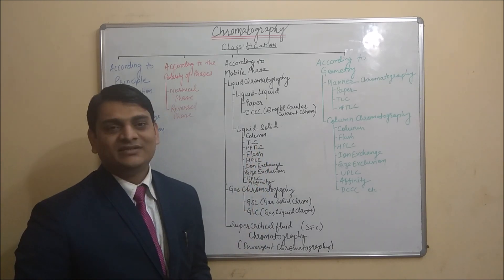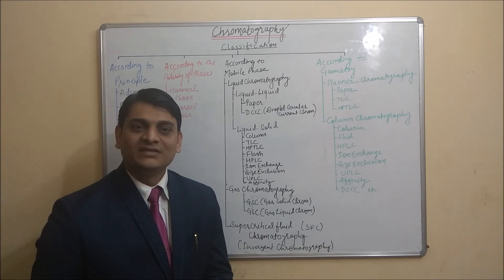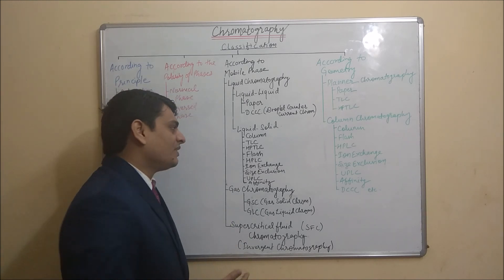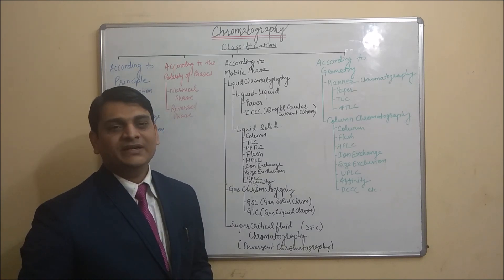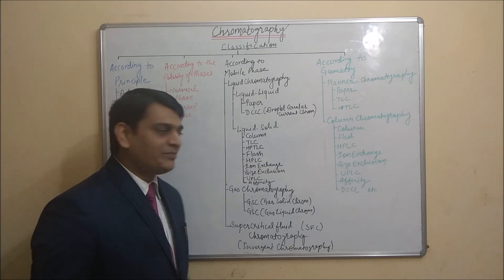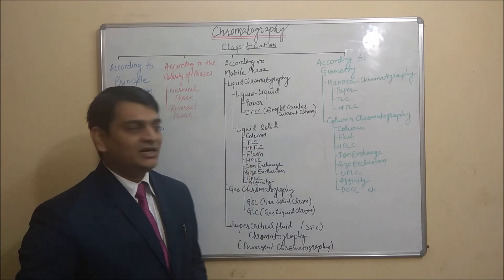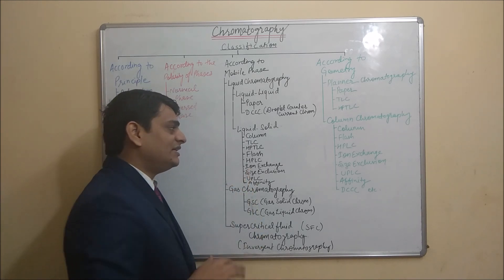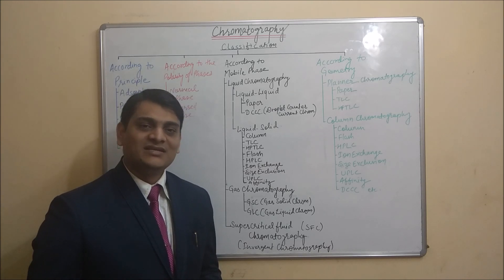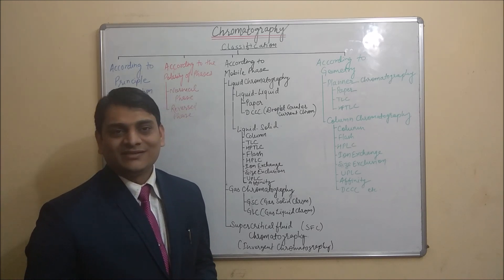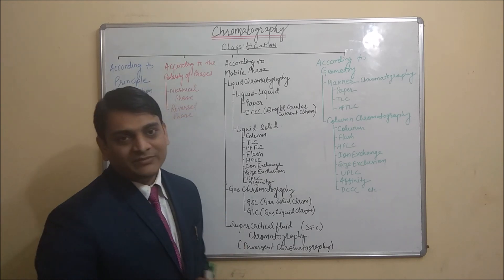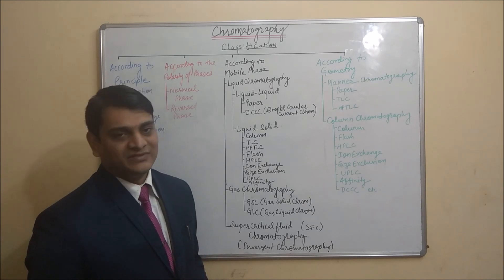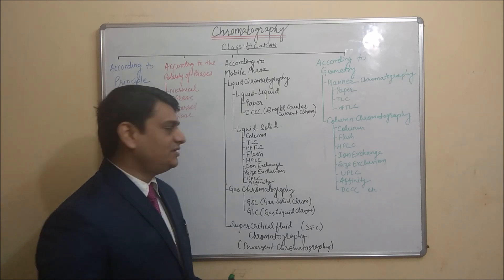The next one is TLC (thin layer chromatography), where a solid stationary phase and liquid mobile phase are used. HPTLC (high performance thin layer chromatography) is an advanced version of TLC. The difference between TLC and HPTLC lies in the particle size of the stationary phase: in TLC, the average particle size is approximately 15 micrometers, while in HPTLC it is 7 micrometers, giving better separation due to greater surface area.